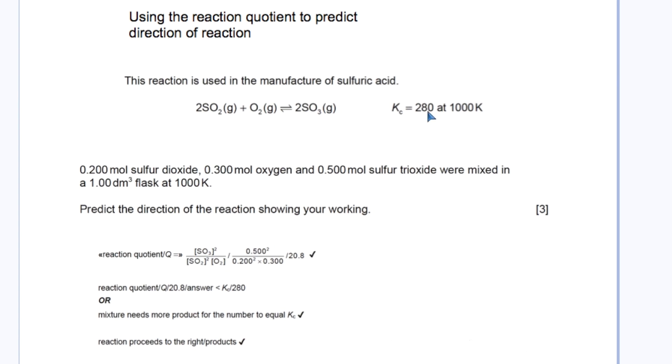If Kc, the equilibrium constant, is 280, and when you solve given these concentrations for the mixture not at equilibrium, you get an answer of 20.8, which is far less than 280. This shows the amount of product relative to reactants is far less than in the equilibrium mixture. So the reaction is still proceeding towards products, or moving towards the right. You can say the mixture needs more product for the number to equal Kc. These were the three specific points sought to answer the question: predict the direction of the reaction showing your working.